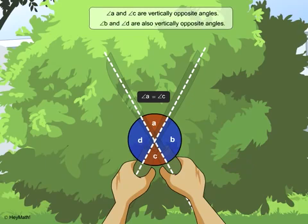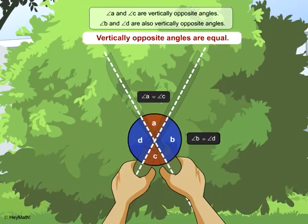Similarly, angle B and angle D are also vertically opposite angles. So, angle B equals angle D. Thus, we can summarise that vertically opposite angles are equal.